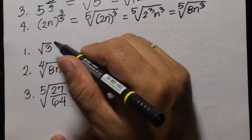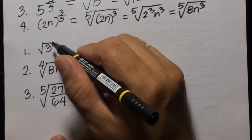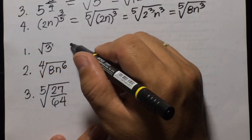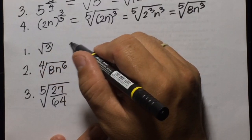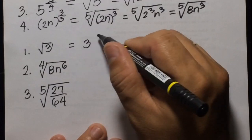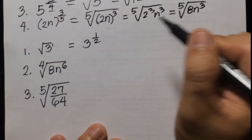Now converting from radical to exponential form — the square root of 3: the exponent here is 1 and the index is 2, so we just write it as 3 to the power of 1 half.